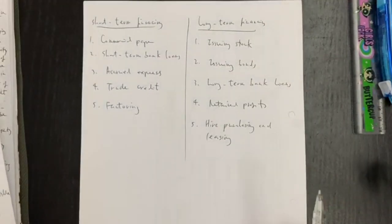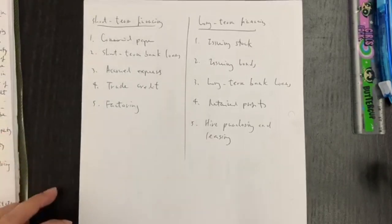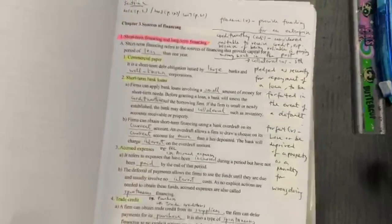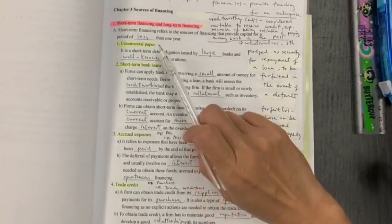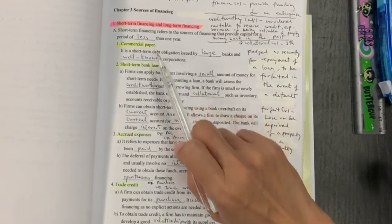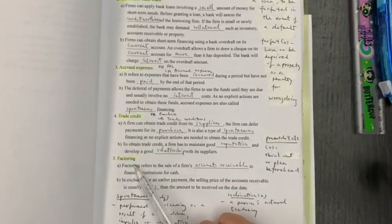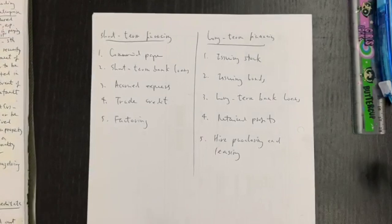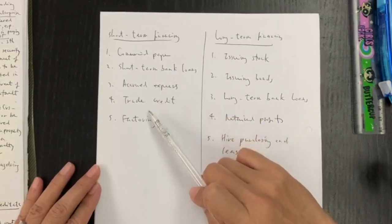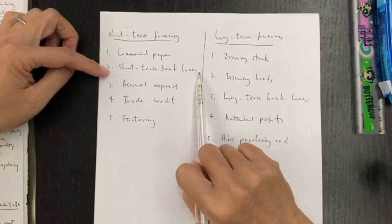Now let's look at the detail for short-term financing and long-term financing. You can use another colour to highlight how many methods we have for short-term financing. There are five ways: commercial paper, short-term bank loans, accrued expenses, trade credits, and factoring. I need to explain some of the technical terms. We have already talked about short-term bank loans.